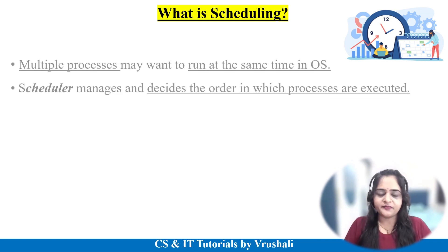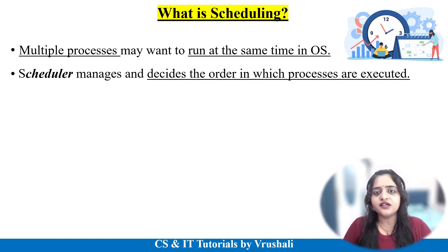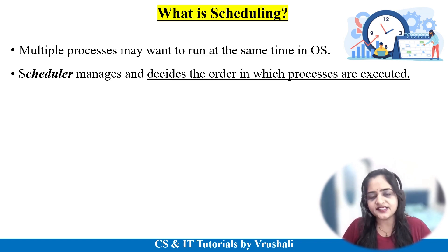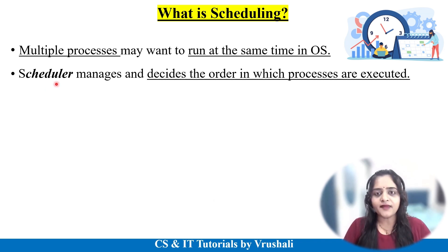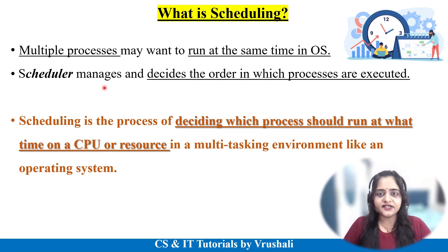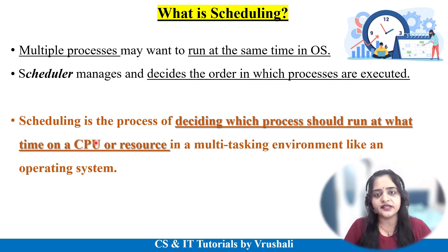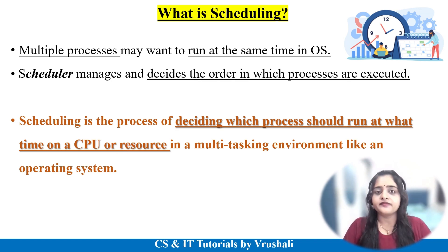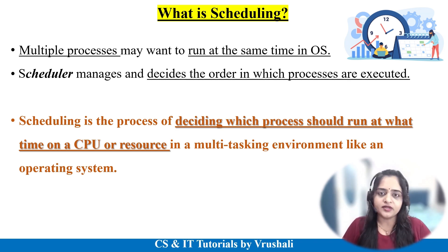The first question is: what exactly is scheduling? As we discussed earlier, the operating system follows a multiprocessing and multitasking environment. Multitasking means performing multiple tasks at the same time, providing a more efficient and faster environment in the operating system, different mobile applications, or websites. In the operating system there is a scheduler — the scheduler manages and decides the order of different processes for execution, and this process is called scheduling. Scheduling decides which process should run at what time on a particular CPU, and also which resources are required. It manages the complete multitasking environment, making it one of the most important processes in the operating system.